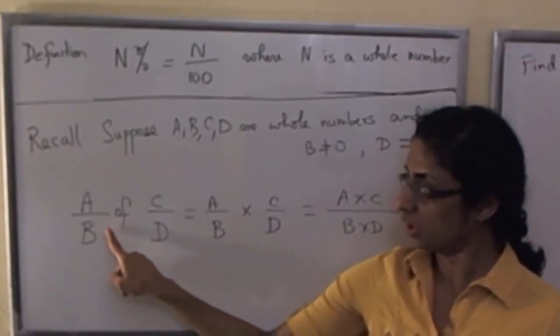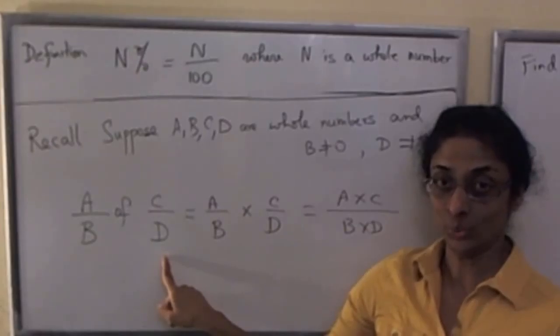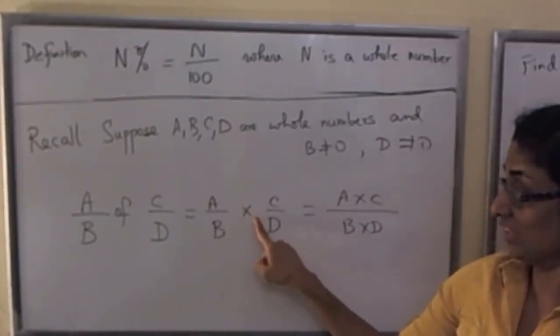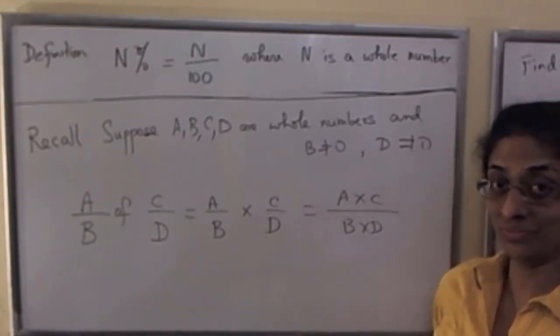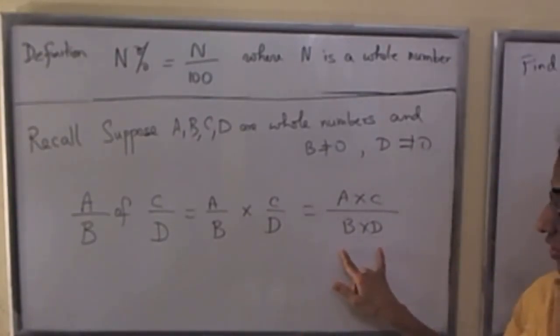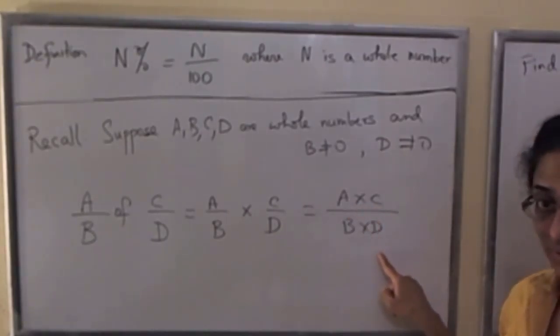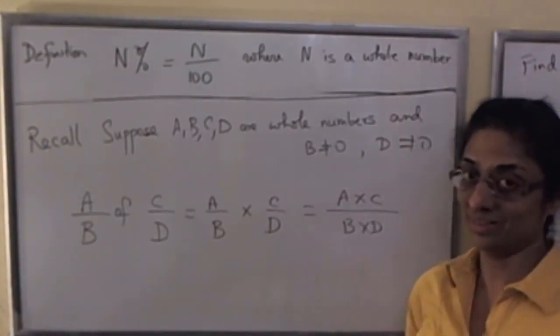A over B of C over D is really the same thing as A over B times C over D, and both these expressions are in fact equal to A times C over B times D. We discuss this in another video.